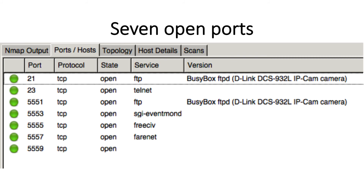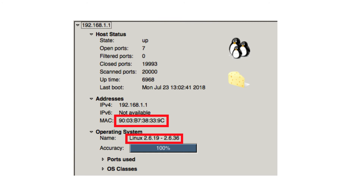Zenmap identified seven open ports. Looking at the left, you see port numbers 21, 23, all the way to 5559. The state shows they're open and listening. The service column shows Zenmap's best guess at what service is being provided—it guessed several correctly and several incorrectly. Zenmap also identified the MAC address of the drone—recall that a MAC address is like a unique social security number for a computing device, associated with the network card. It also identified the operating system as Linux, showing the kernel version—as of March 2020 it's a very old Linux kernel.